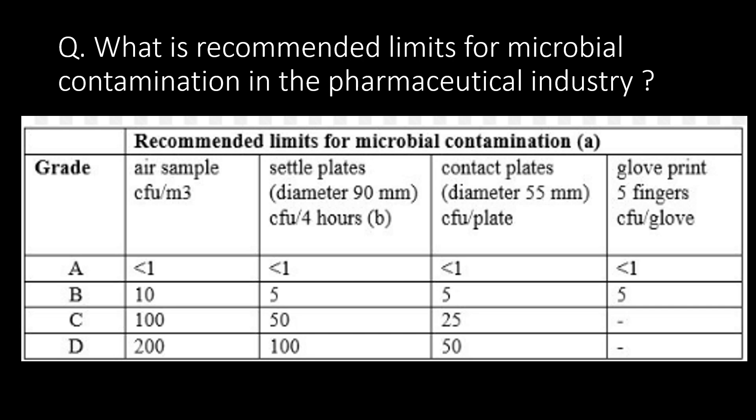What are the recommended limits for microbial contamination in the pharmaceutical industry? You can refer to the table below for recommended limits for microbial contamination in the pharmaceutical industry for various grades: Grade A, Grade B, Grade C, and Grade D.